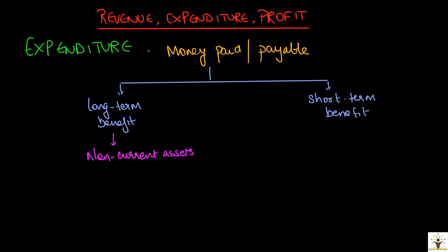Expenditures that give a short-term benefit to the business include amount spent for buying goods which are meant for resale or availing services or anything else that will give benefit for less than one year. For example, amount paid for purchase of goods, salaries paid, rent paid, insurance premiums paid, etc.